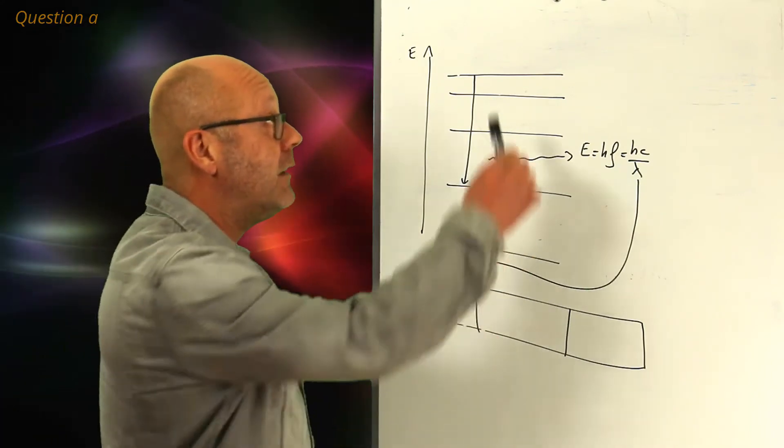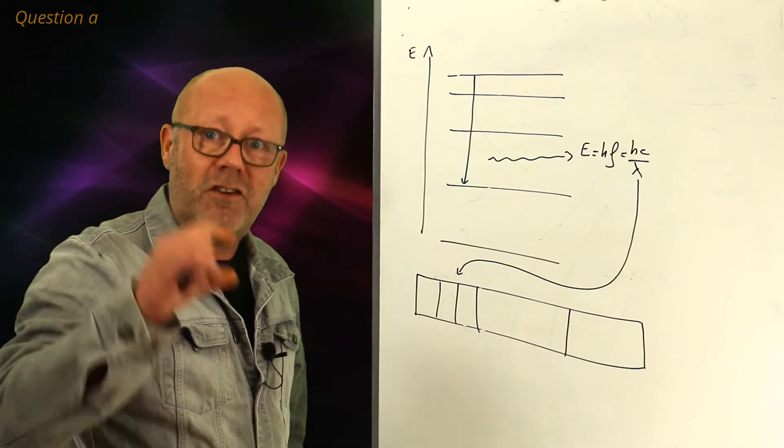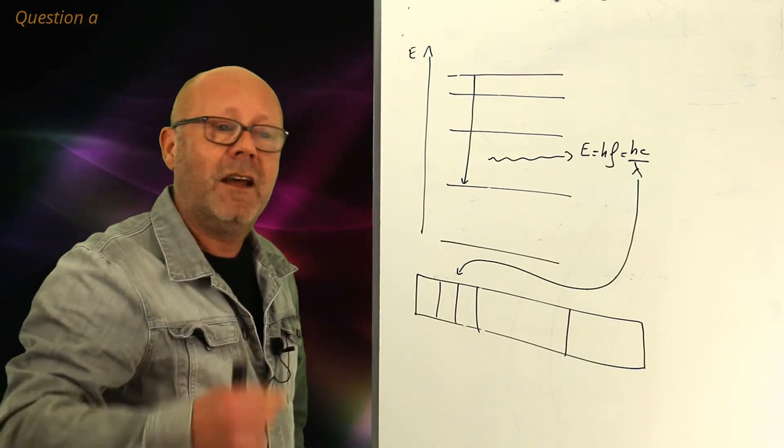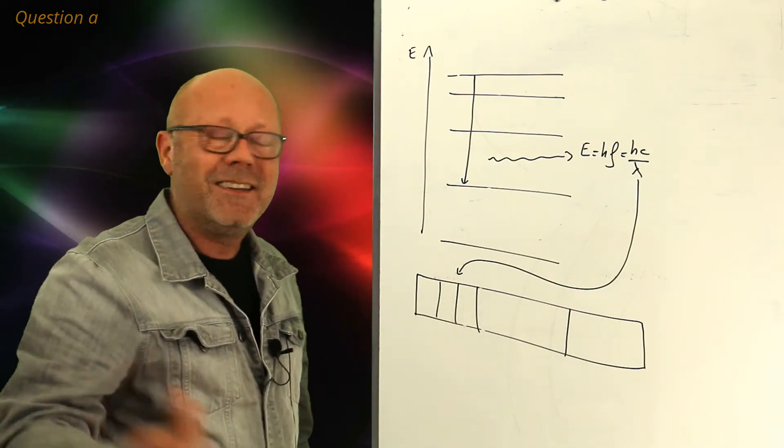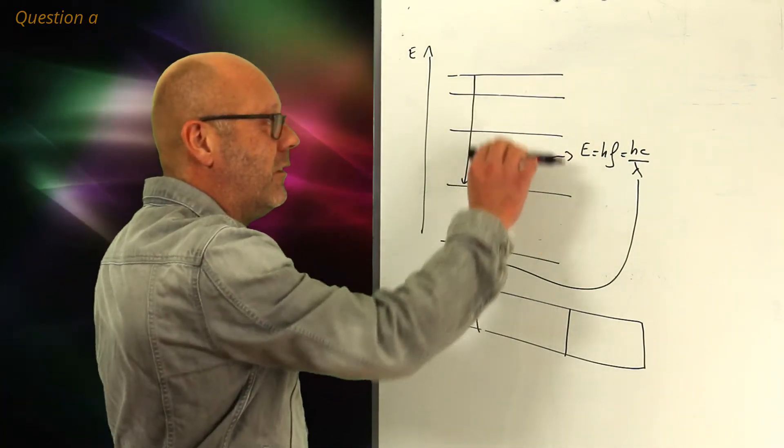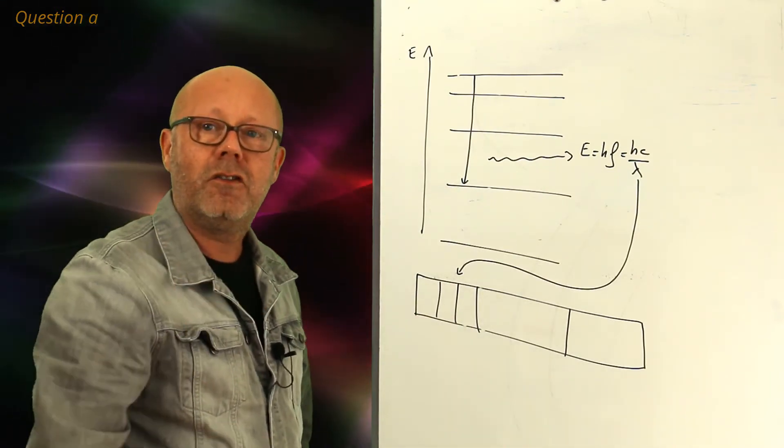Therefore, the emission transition of the atom can only be of certain energies. The atom is only allowed to release a fixed amount of energies. That leads to the fact that the levels need to be discrete. The atom can only have certain levels of energy.